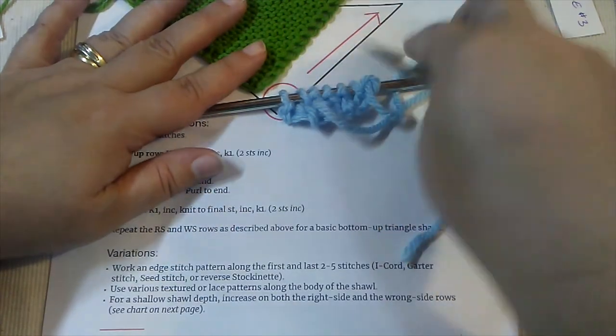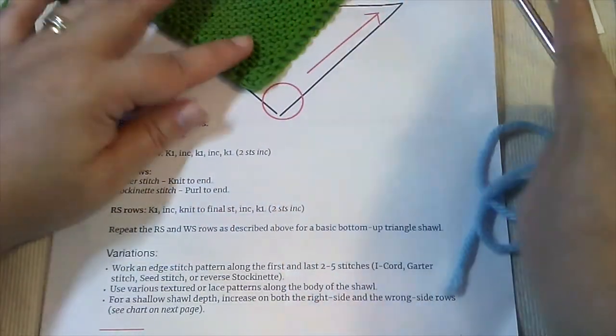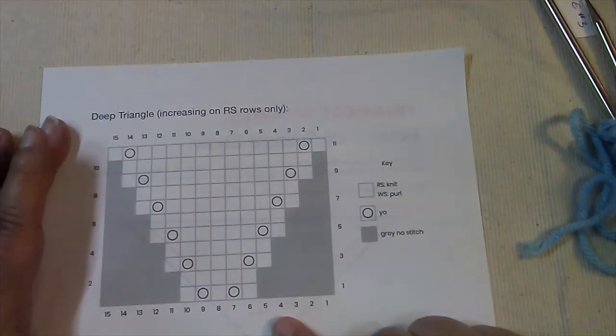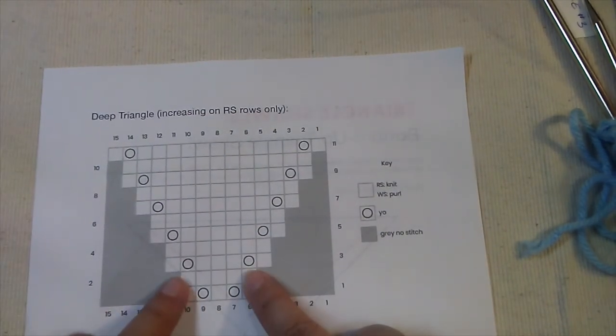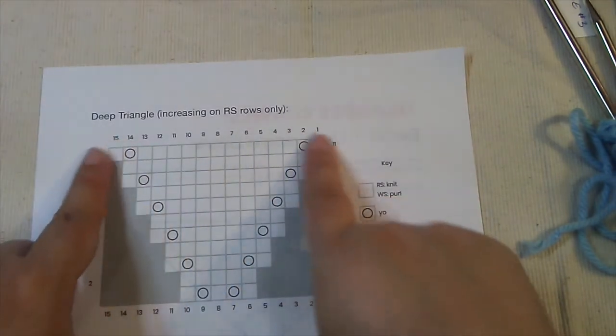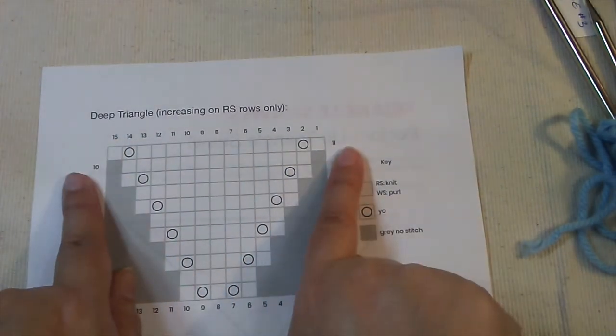That gets you the basic construction of the pattern. Of course there's lots of ways to vary this. You could include a stitch pattern in there. Of course you'd have to do some math and figure that out, but if you look here, if we were to chart out the shawl I just started, this is what it would look like. We have increases worked on right side rows, and there you can see the shape is developing just like that. So if you had a stitch pattern, you would want to fit it right into this shape right here.